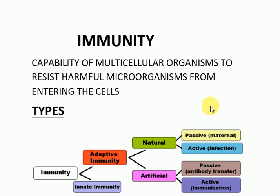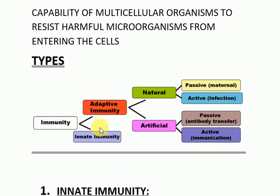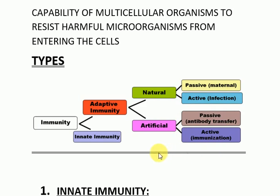Today's topic is immunity. Immunity is the capability of multicellular organisms to resist harmful microorganisms from entering the cells and protect us from different types of infections and diseases. There are two types of immunity: innate immunity and adaptive or acquired immunity. Innate immunity is present since birth, while adaptive immunity is acquired. Adaptive immunity is further divided into natural immunity or artificial immunity, and each can be active or passive type.